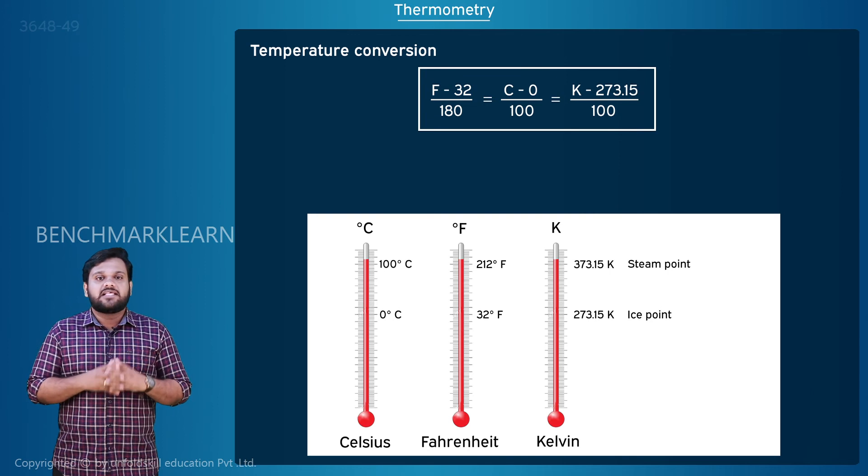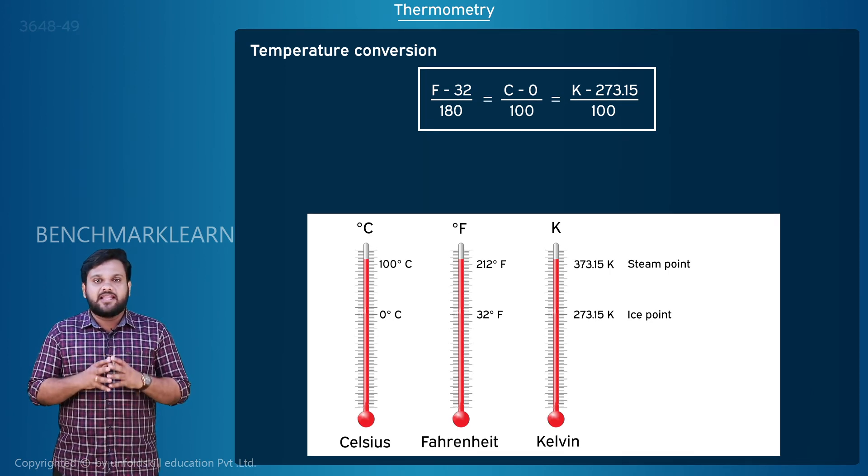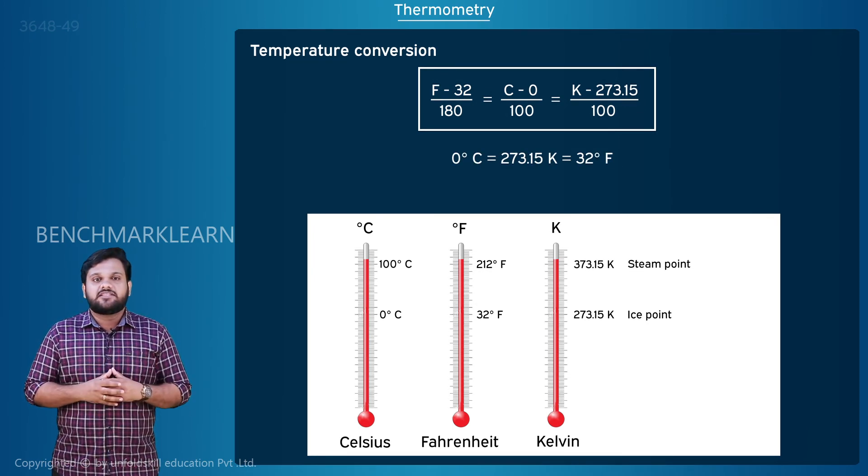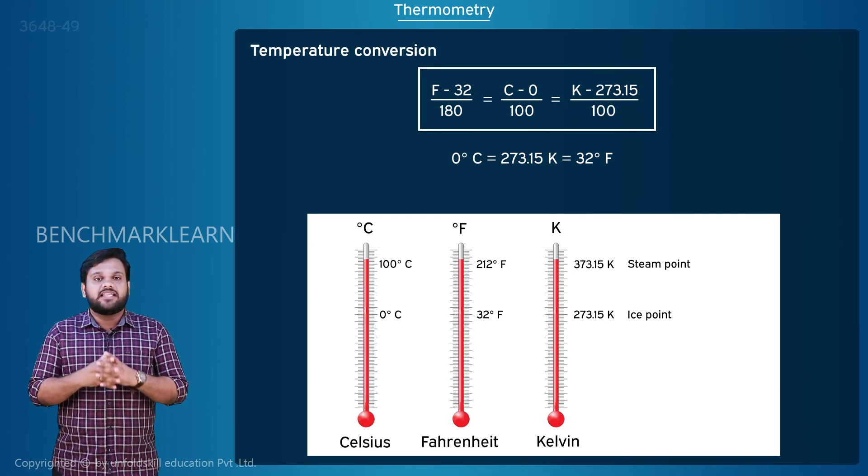We can connect 0 degrees Celsius, which is the ice point, to Celsius and Fahrenheit scale as 0 degrees Celsius is equal to 273.15 Kelvin, which is equal to 32 degrees Fahrenheit.